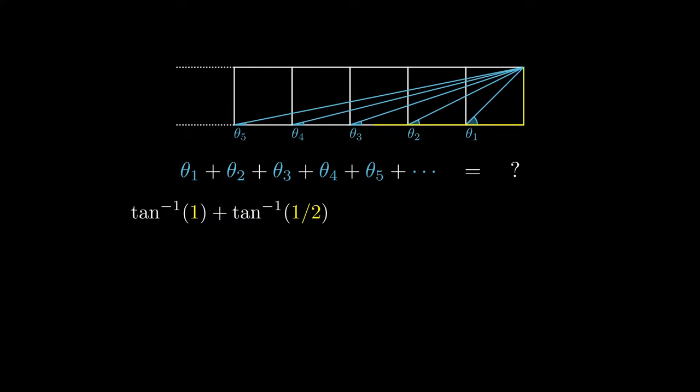For theta 3, the adjacent has length 3, and therefore theta 3 equals the arctangent of 1 over 3. We can repeat this process and still ask the question: what is the sum of the infinitely many arctangents?